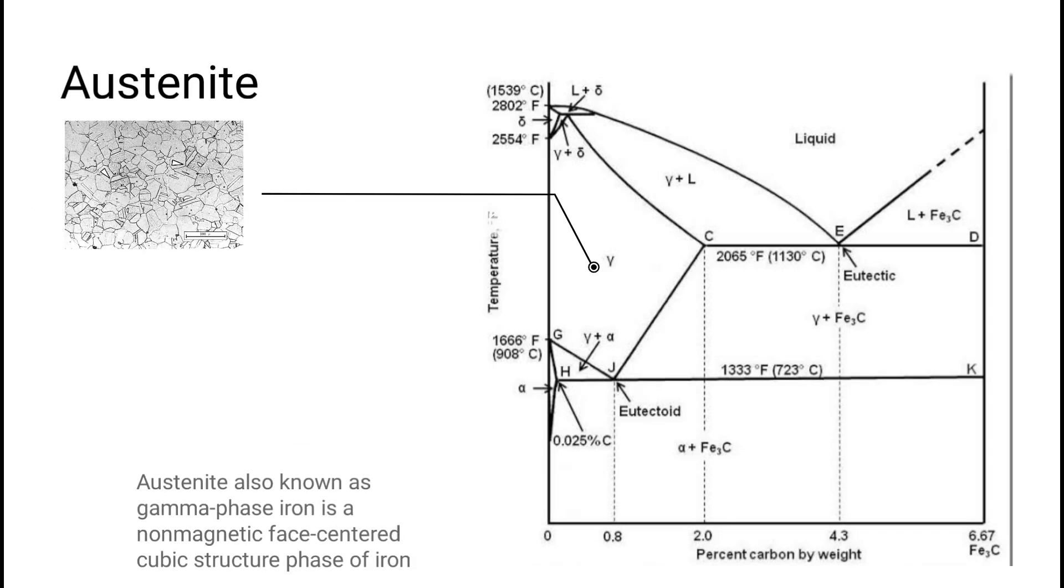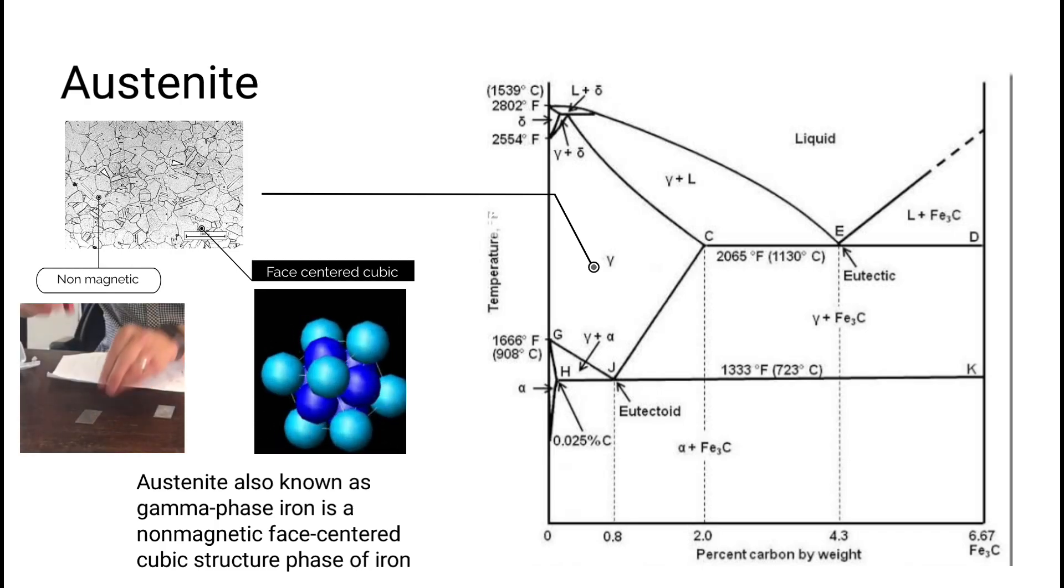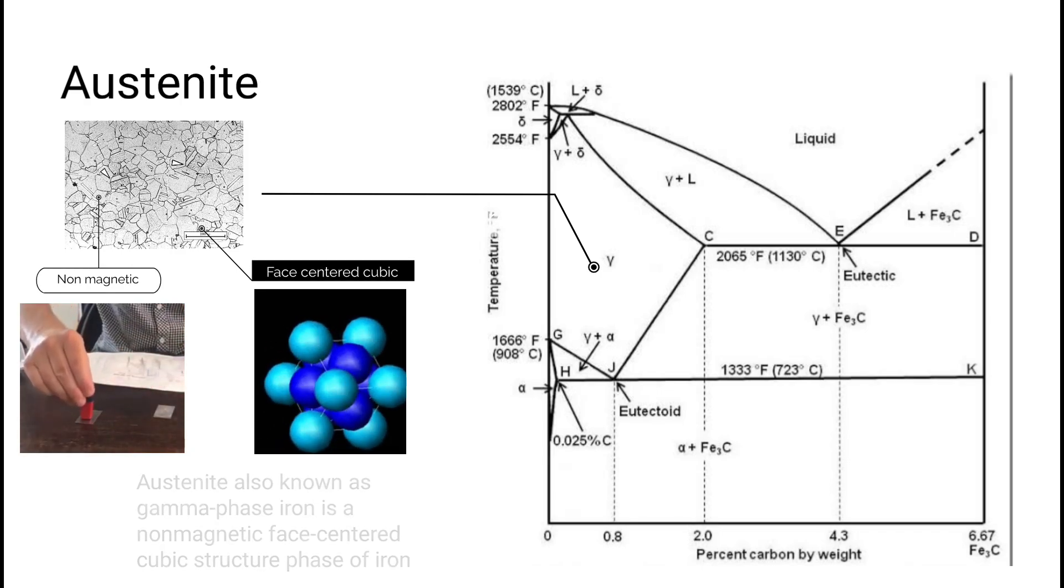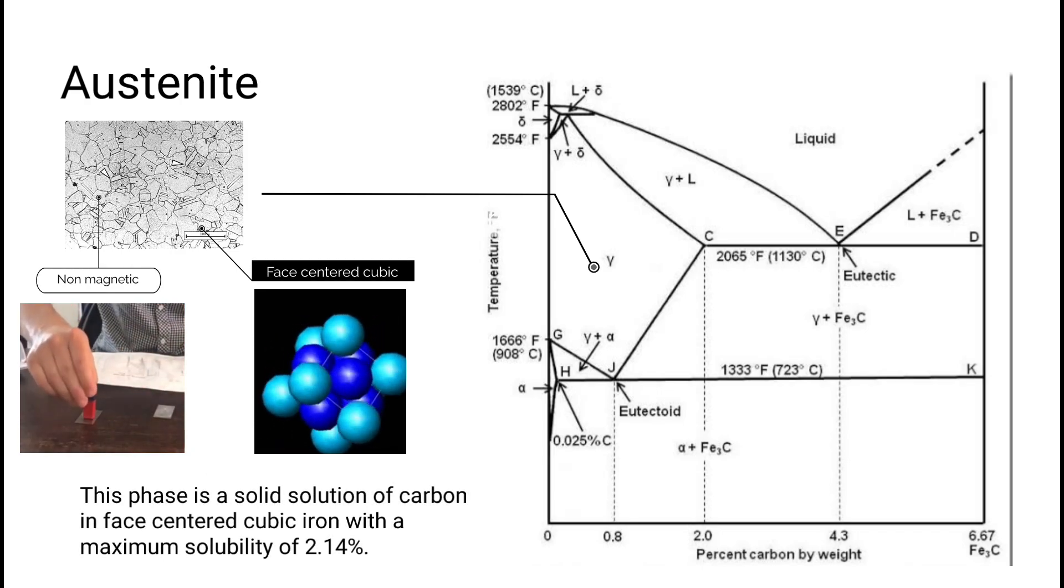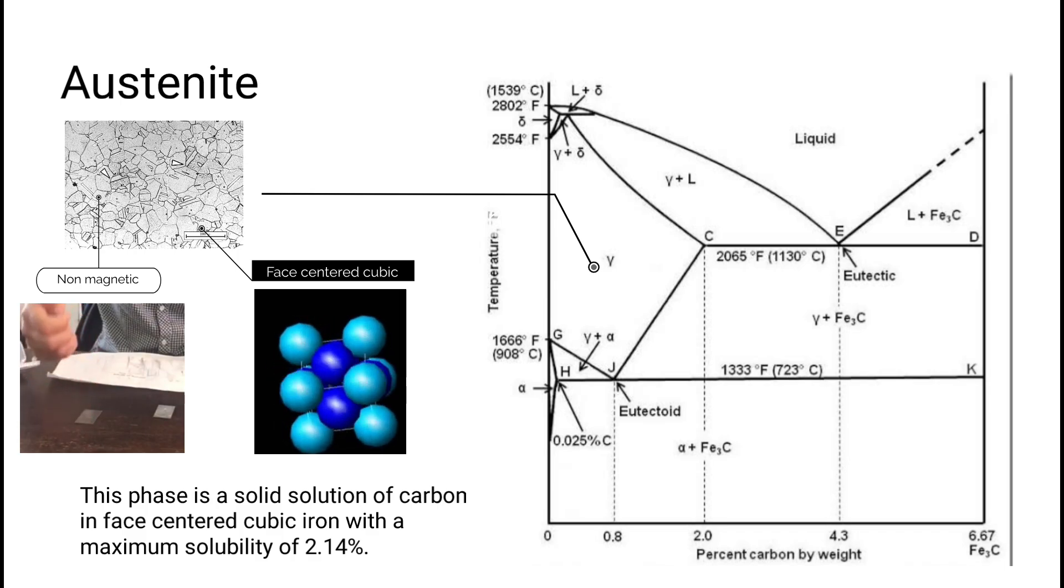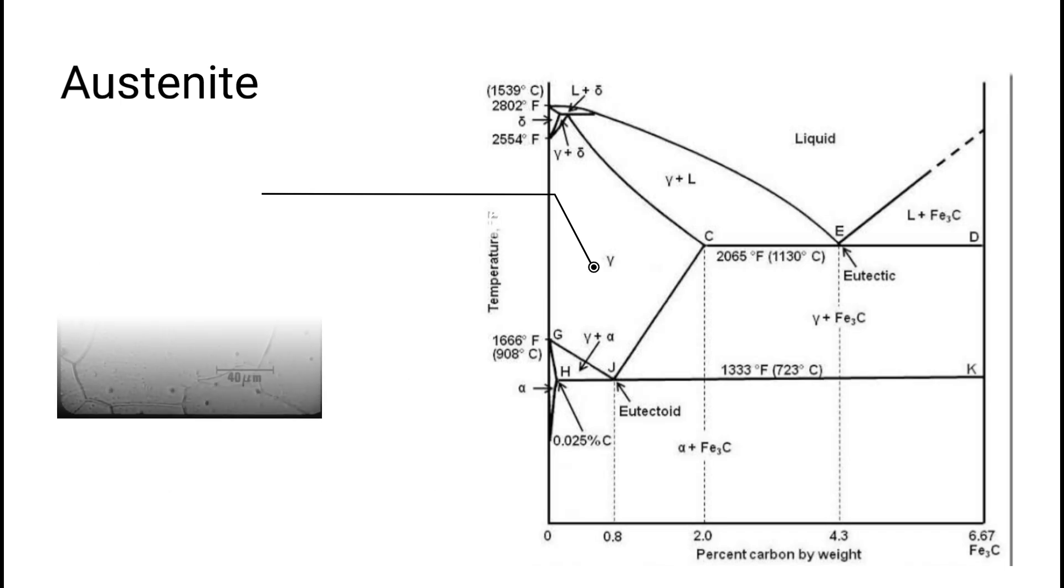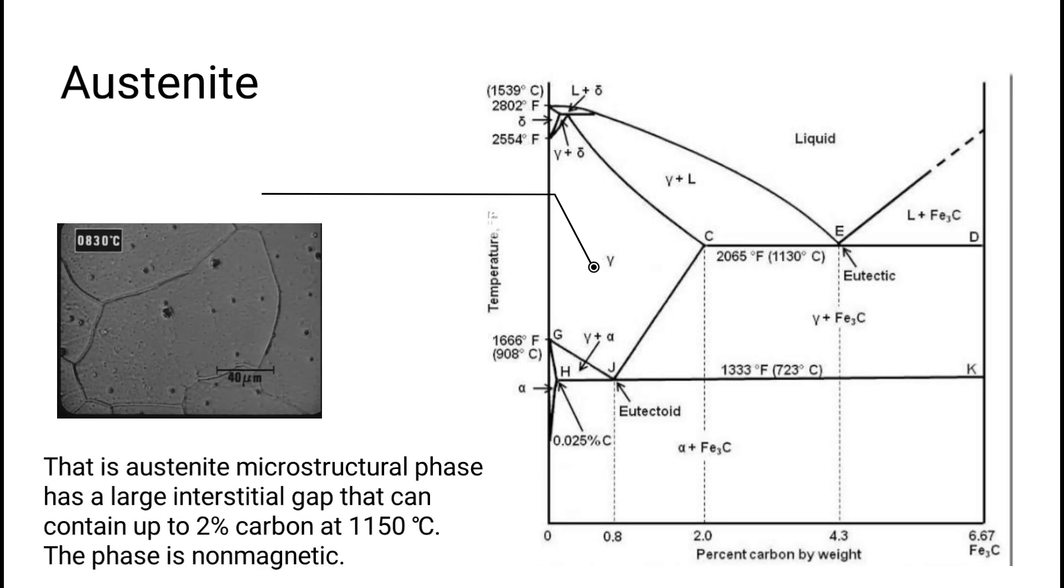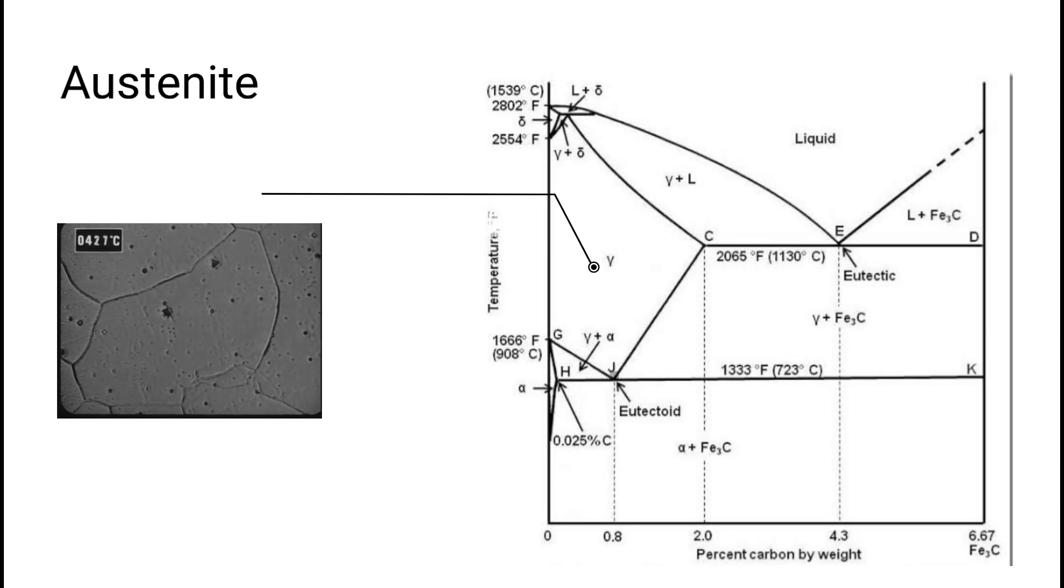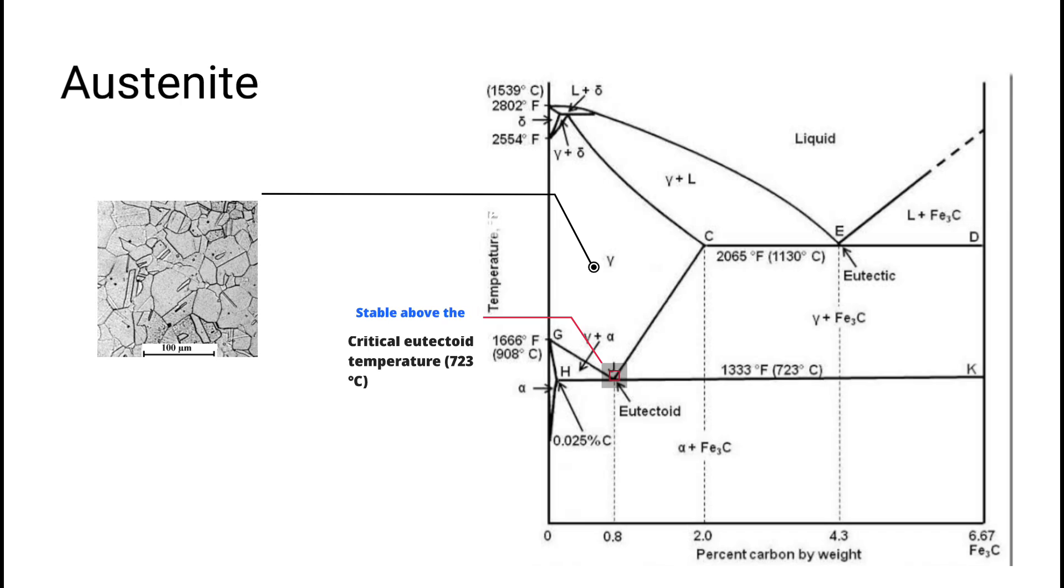Austenite, also known as gamma phase iron, is a non-magnetic face-centered cubic structure phase of iron. This phase is a solid solution of carbon in face-centered cubic iron with a maximum solubility of 2.14 percent. That is, austenite microstructure phase has a large interstitial gap that can contain up to two percent carbon at 1150 degrees Celsius. The phase is non-magnetic.